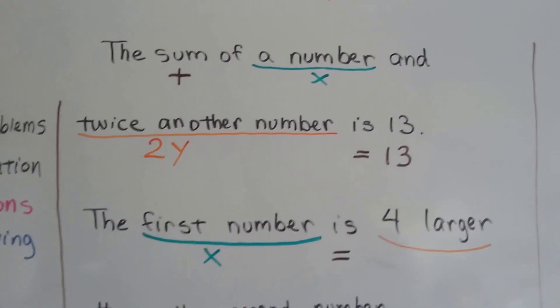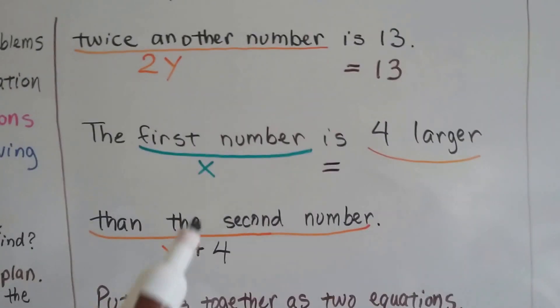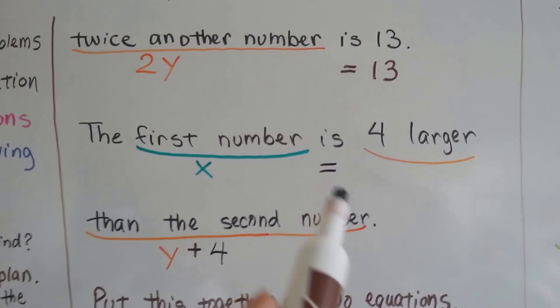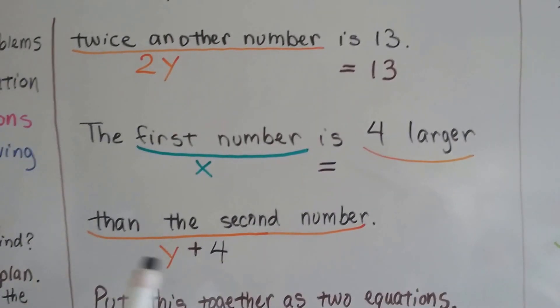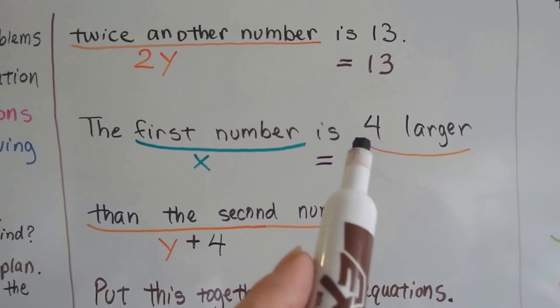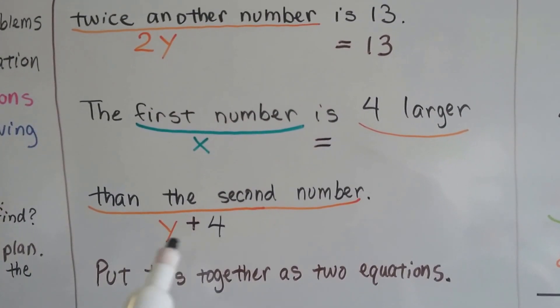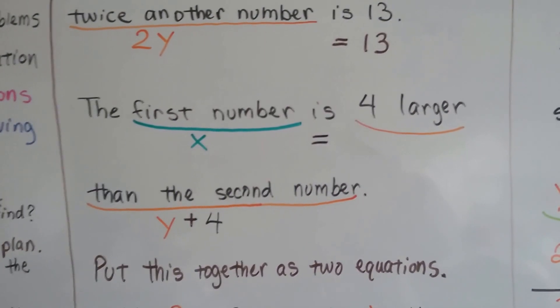Now we can use the information from the second sentence to make our second equation. The first number x is equals 4 larger than the second number. Now it doesn't say 4 times larger, it just says 4 larger. So we're just going to add y plus 4. It's 4 larger than the second number.